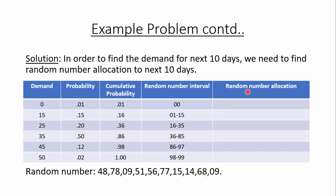After establishing the intervals, we find the random number allocation — we check which interval each random number from the problem falls into. The first random number is 48, which lies between 36 and 85, so the demand for day 1 is 35 cakes. The second random number is 78, which also lies between 36 and 85, so the demand for day 2 is also 35 cakes.